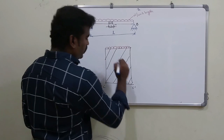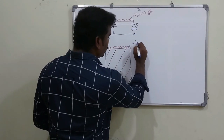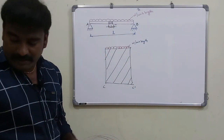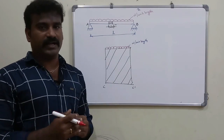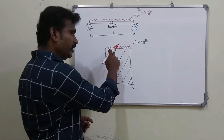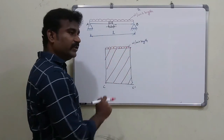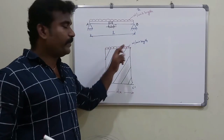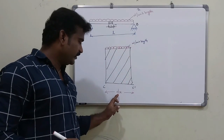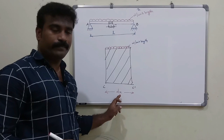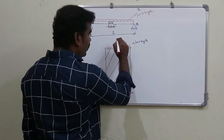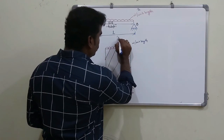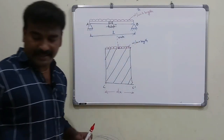So we have an element with a load W per unit length. If you don't know how to convert the UDL, how to convert the UDL to a point load — the UDL over length dx converts to a point load of W into dx, acting downward at the center of the element.